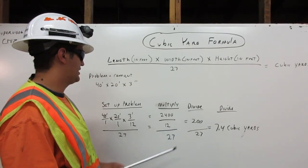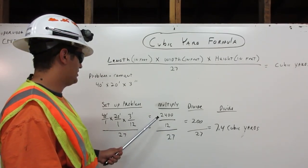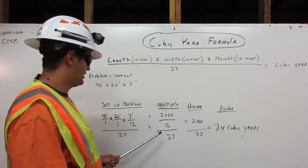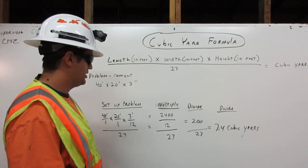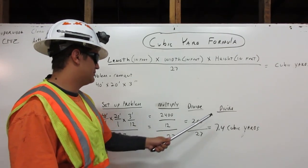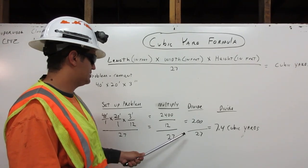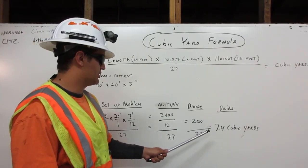The next step is divide. 2400 divided by 12 equals 200. And we carry the 27 over. And we divide one more time. 200 divided by 27 equals 7.4 cubic yards.